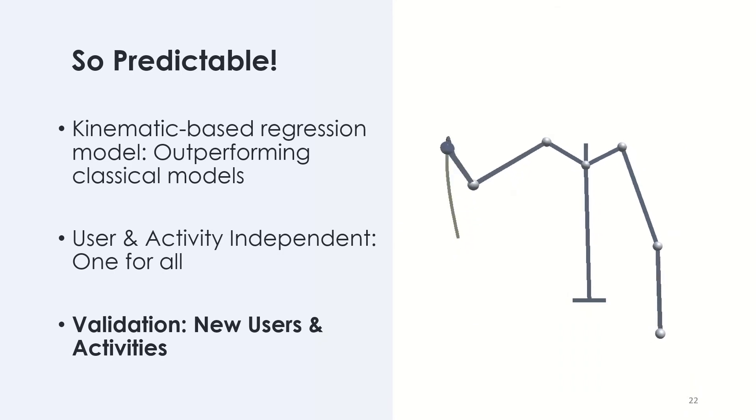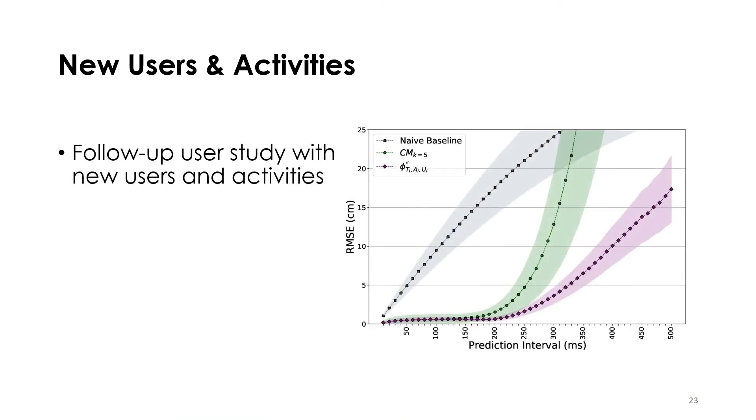Now, I will move on to how we validated our model. To validate our model, we conducted a follow-up study with three users and two new tasks, which included free-form sweeping arm movements and a dancing task, where our model showed similar results to the previous study.